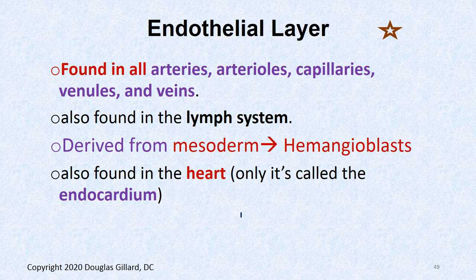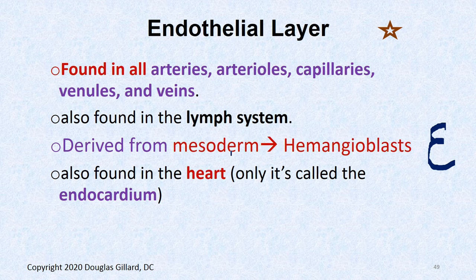Endothelial cells are found in arteries, arterioles, capillaries, venules, veins, and the lymph system as well. A little embryology: blood vessels come from mesoderm. Mesoderm is converted into hemangioblasts, which give rise to blood vessels. There's also an endothelium layer lining the heart — same deal, simple squamous — but we call it the endocardium rather than endothelium.